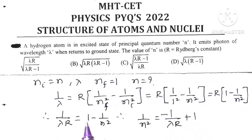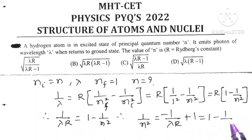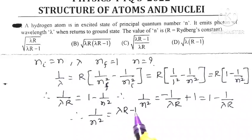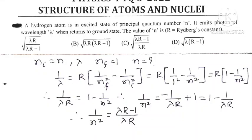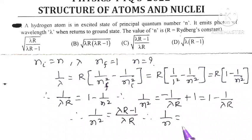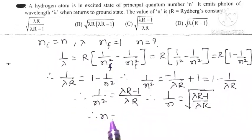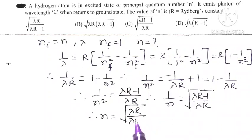Rearranging: 1 upon n squared equals (lambda R minus 1) upon lambda R. Therefore 1 upon n equals the square root of (lambda R minus 1) upon lambda R, and taking the reciprocal, n equals lambda R divided by the square root of (lambda R minus 1).